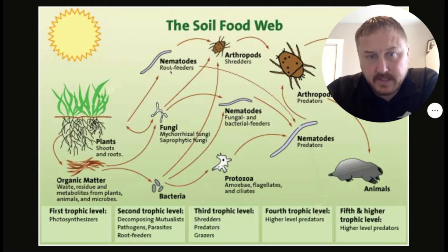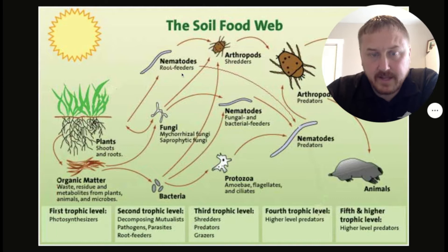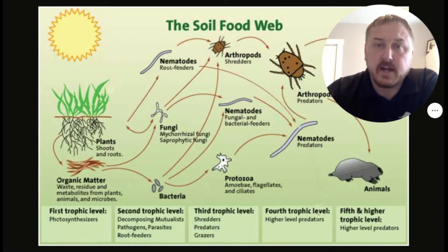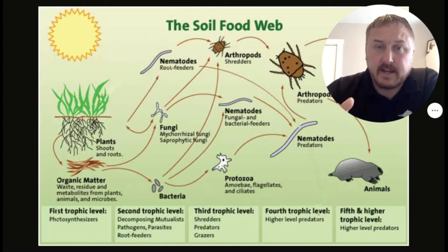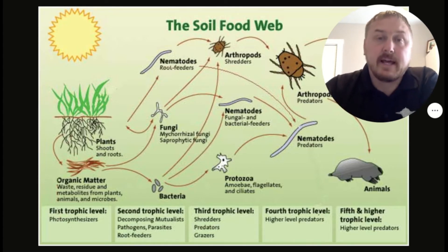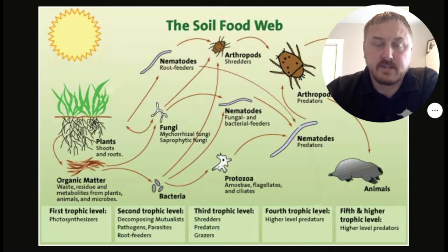The first outflow, starting at the top, is from the plant to this nematode — a root-feeding nematode. Of the hundreds and hundreds of varieties of root-feeding nematodes, many are designed for specific plants or have a specific relationship with certain plant families.